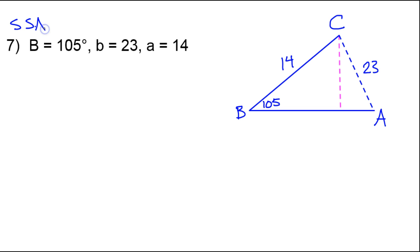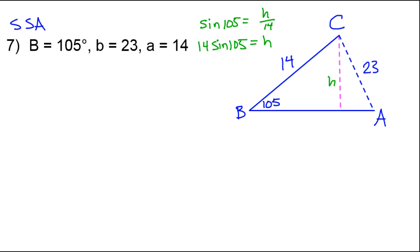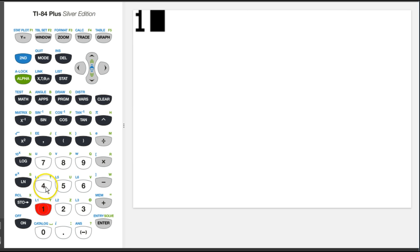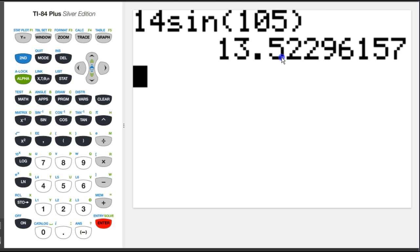In order to figure out whether or not this will make a triangle at all, we need to calculate the height of this triangle. I'm going to call this H. I can find H using sine: the sine of 105 equals H over 14, since sine is opposite over hypotenuse. Multiplying both sides by 14 gives us 14 sine 105 equals H. Putting this in my calculator — 14 sine 105 — I'm getting 13.523.